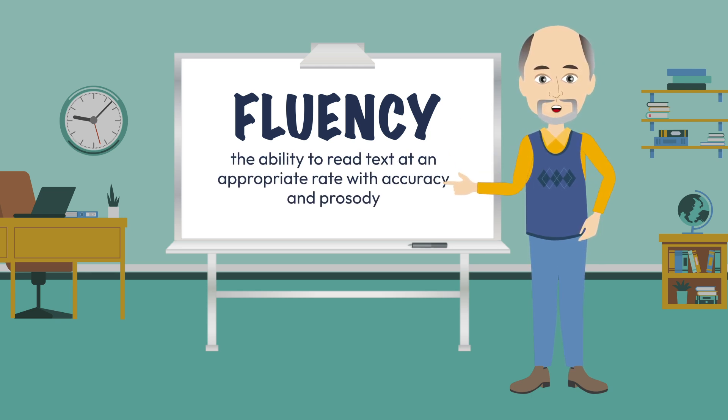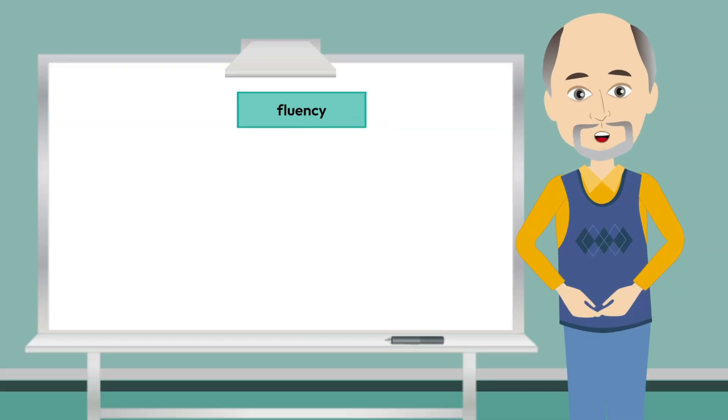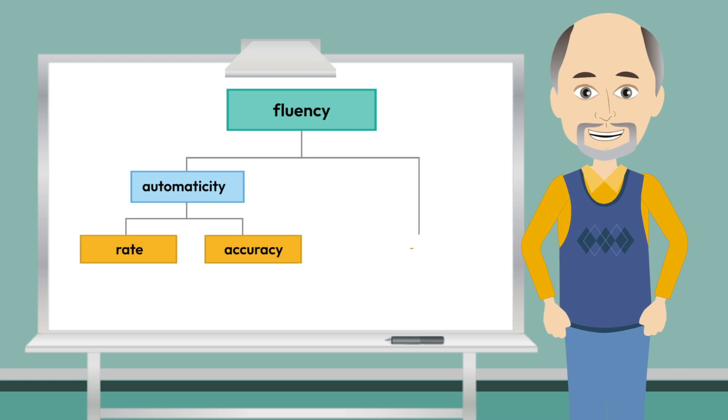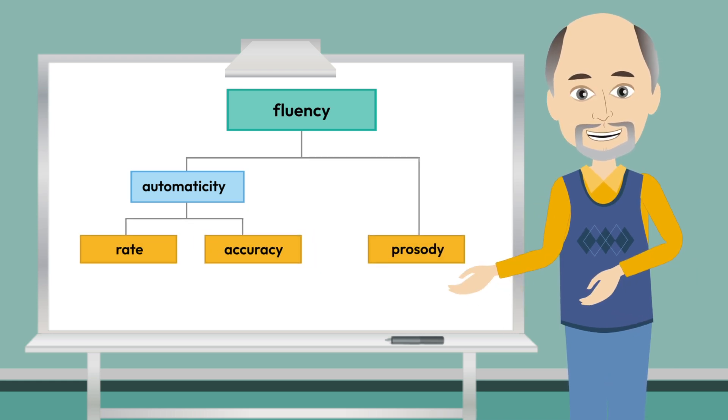This definition spotlights the three key indicators or aspects of fluency that have to be developed and work together to help students read for deep comprehension: accuracy, rate, and prosody.